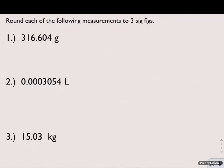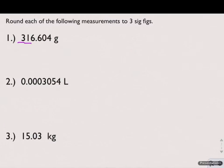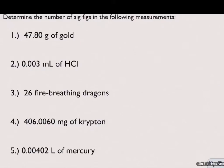Now let's take a look at one final skill: rounding to the correct number of sig figs. You're being asked to round each of these measurements to three sig figs. In order to do this, we need to determine which sig fig is the third one in the measurement. In number one, starting from the left, we have one, two, three sig figs — all non-zero numbers, therefore all significant. Just like rounding any other number, we look to the right of the digit we're interested in: if it's five or higher we round up, and if it's less than five we round down. Here it's greater than five, so our measurement rounds to 317 grams.